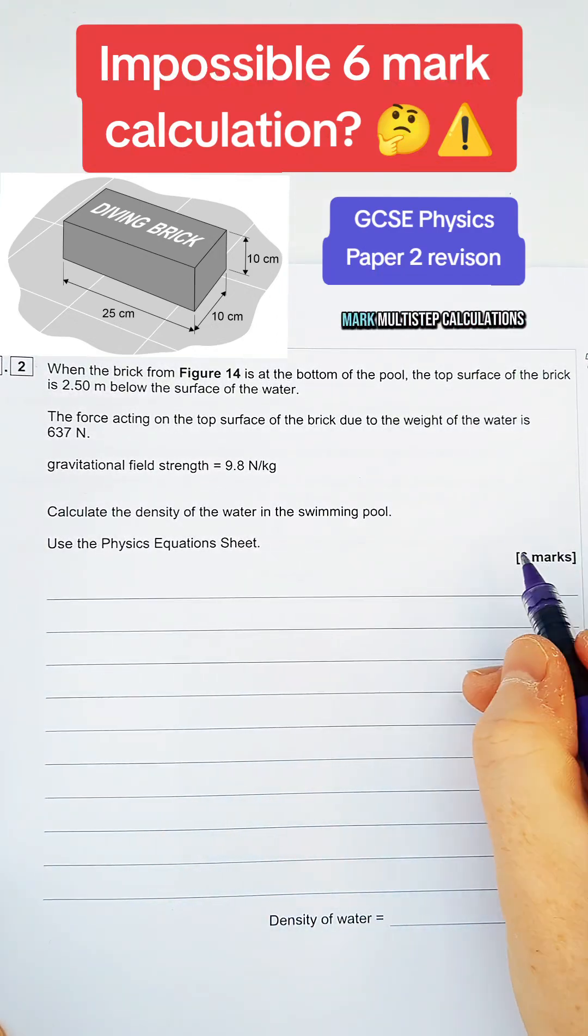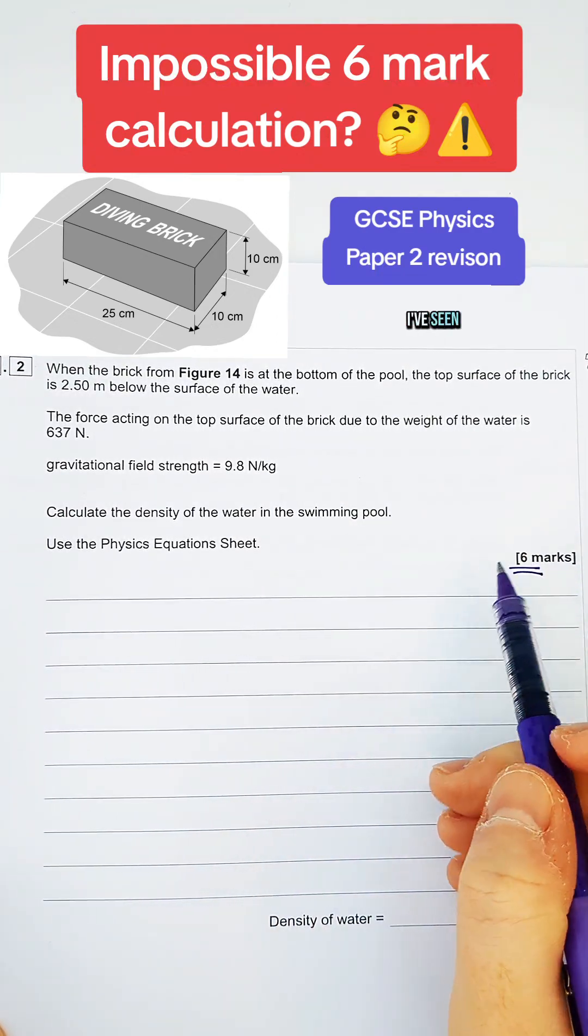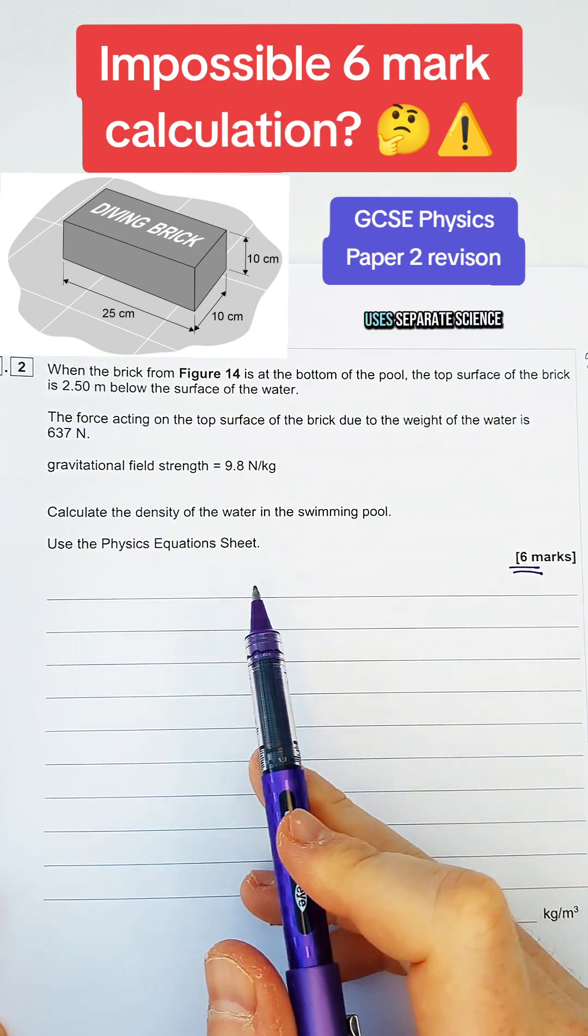It has to be one of the hardest six-mark multi-step calculations I've seen. So separate science only, because it uses separate science equations.